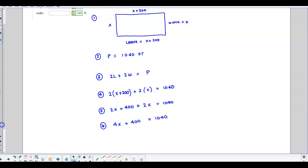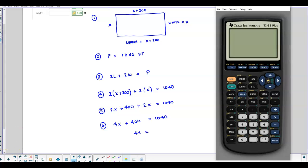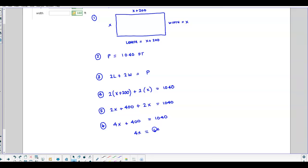Now if we subtract 400 from both sides, we get 1040 minus 400, which gives us 640. And so therefore, x is then going to equal 160.